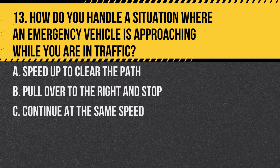Question 13. How do you handle a situation where an emergency vehicle is approaching while you are in traffic? A. Speed up to clear the path. B. Pull over to the right and stop. C. Continue at the same speed. Answer: B. Pull over to the right and stop. This allows the emergency vehicle to pass safely.